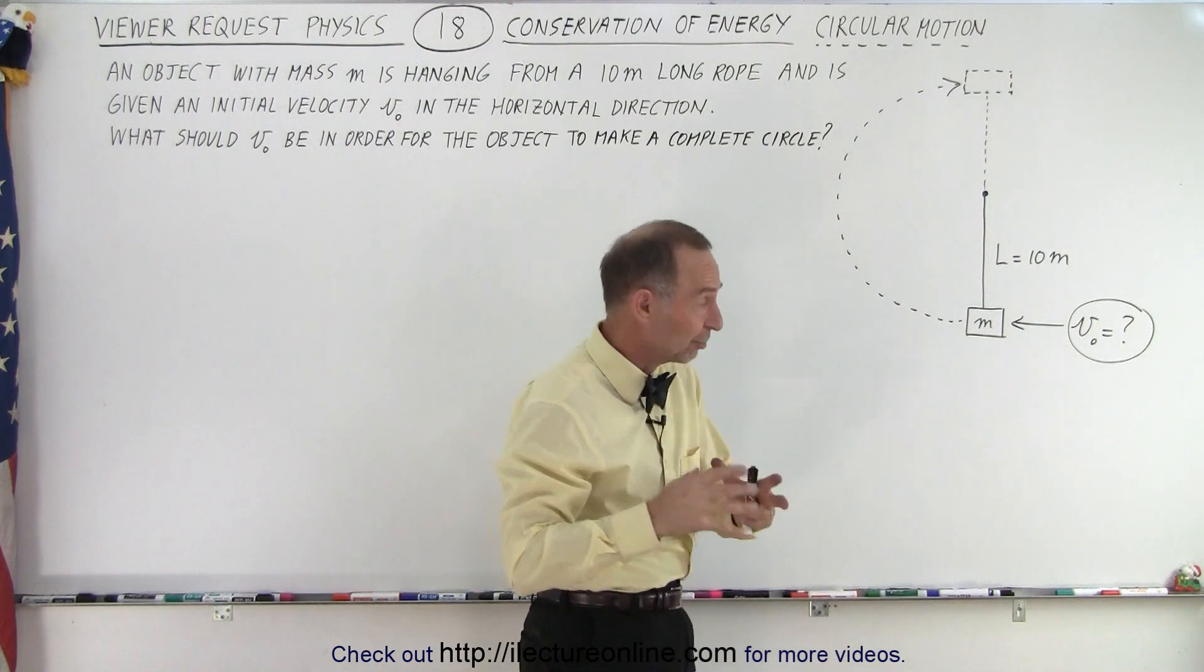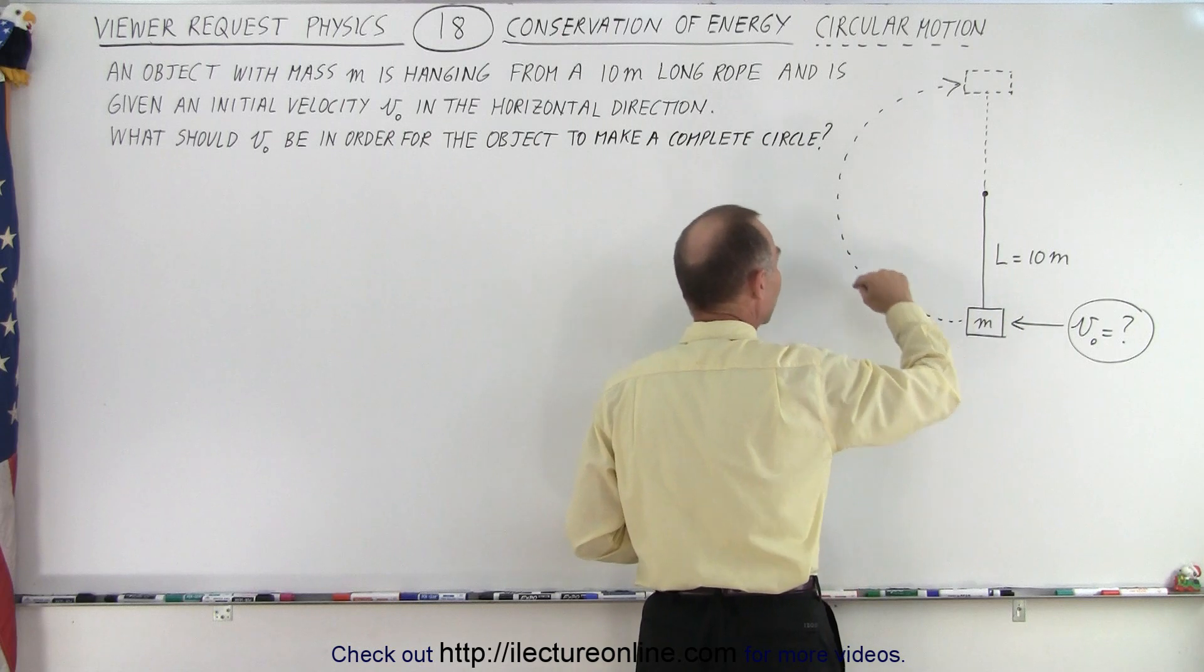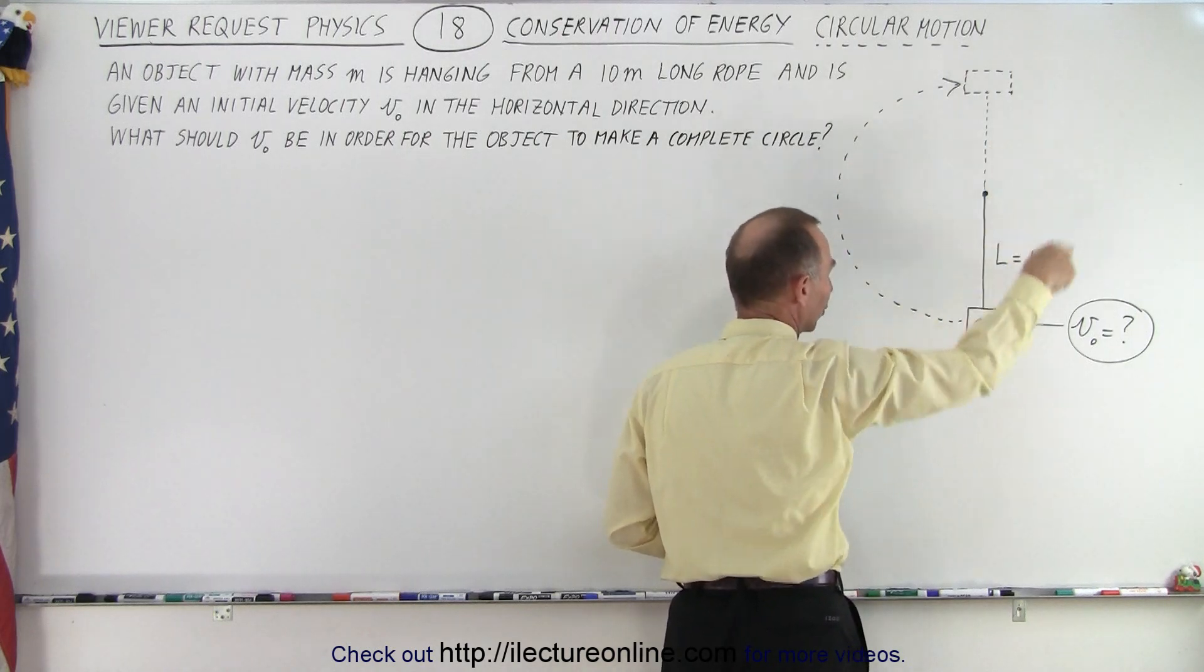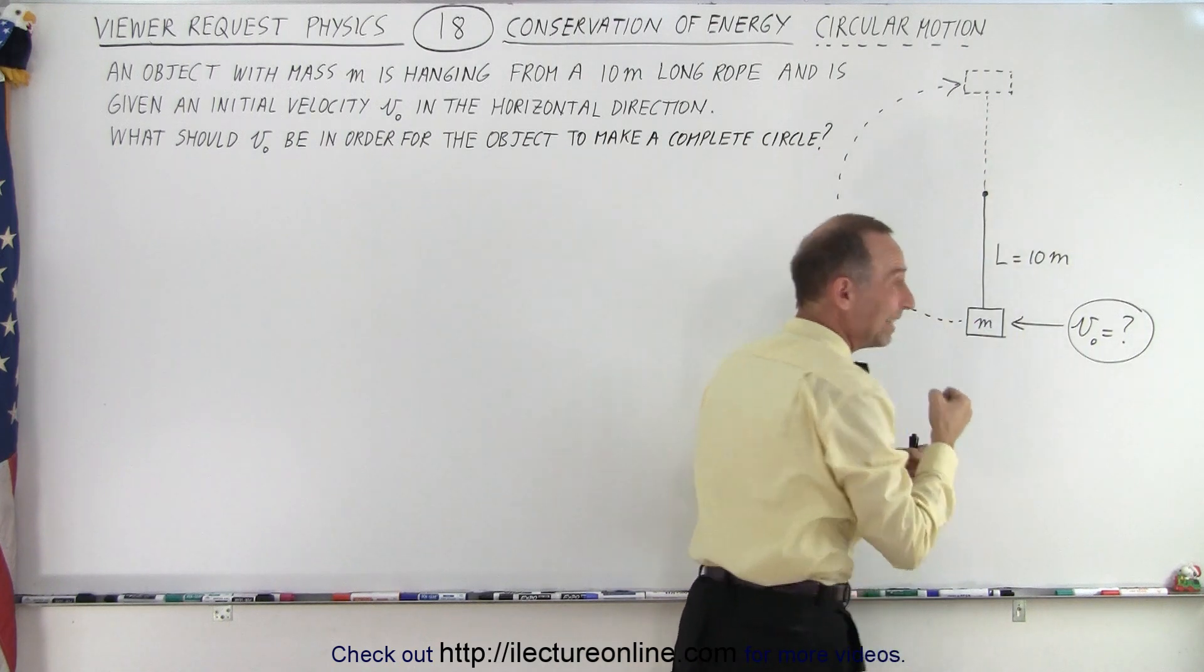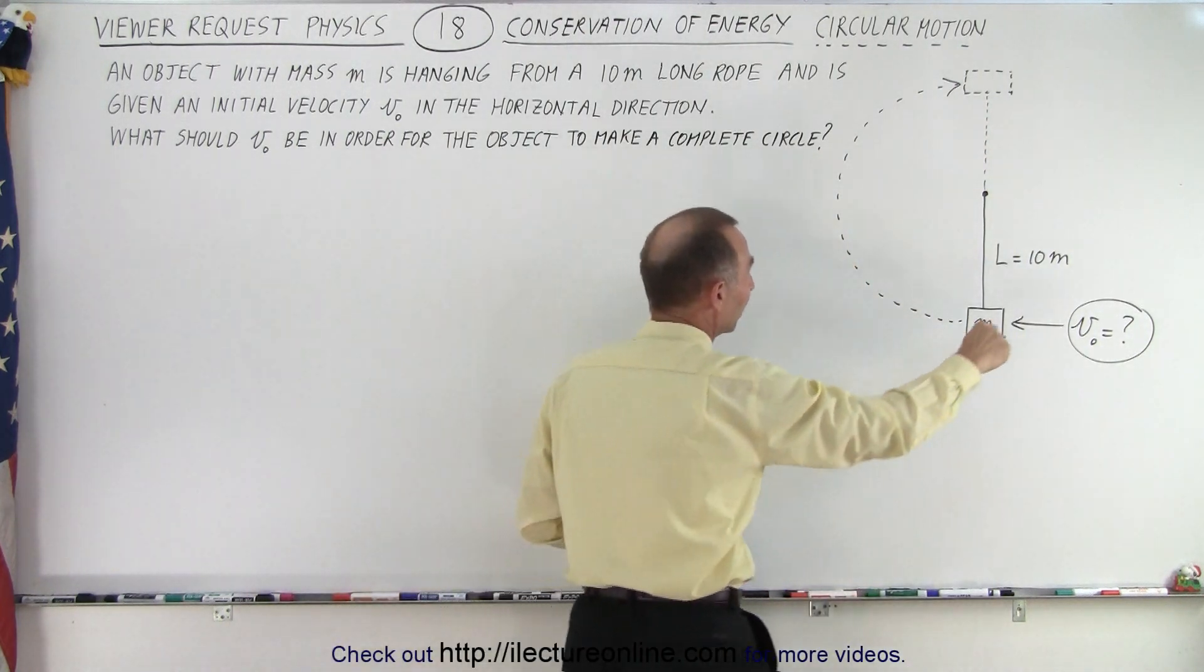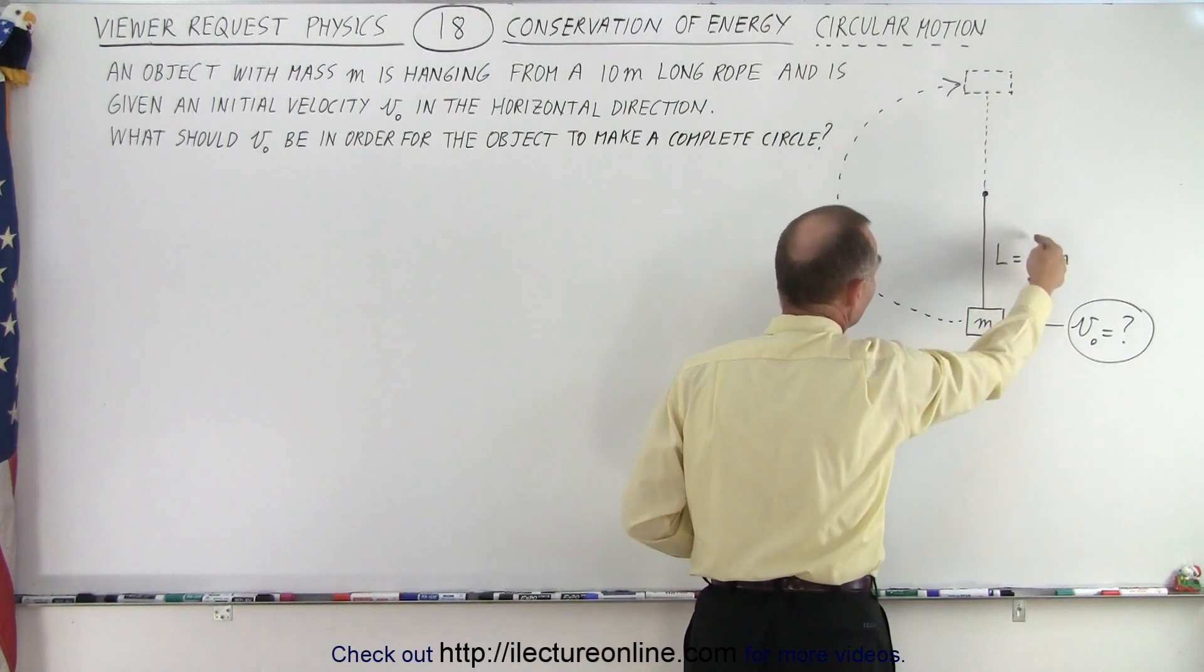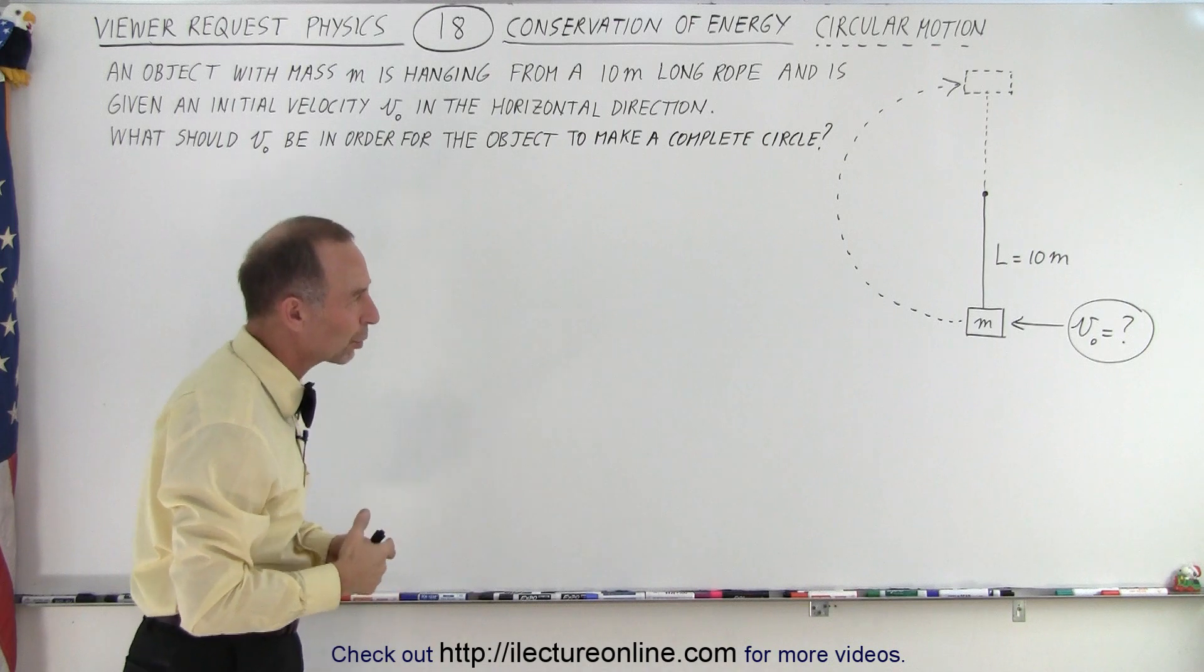What is the minimum initial velocity required that it has in a horizontal direction in such a way that the object will make a complete circle, which means that when it gets to the very top the rope still needs to be taut, needs to be straight. Of course if you don't give it enough velocity it'll come up here and simply just fall down and not make a circular path. So what is that initial velocity required to do so?